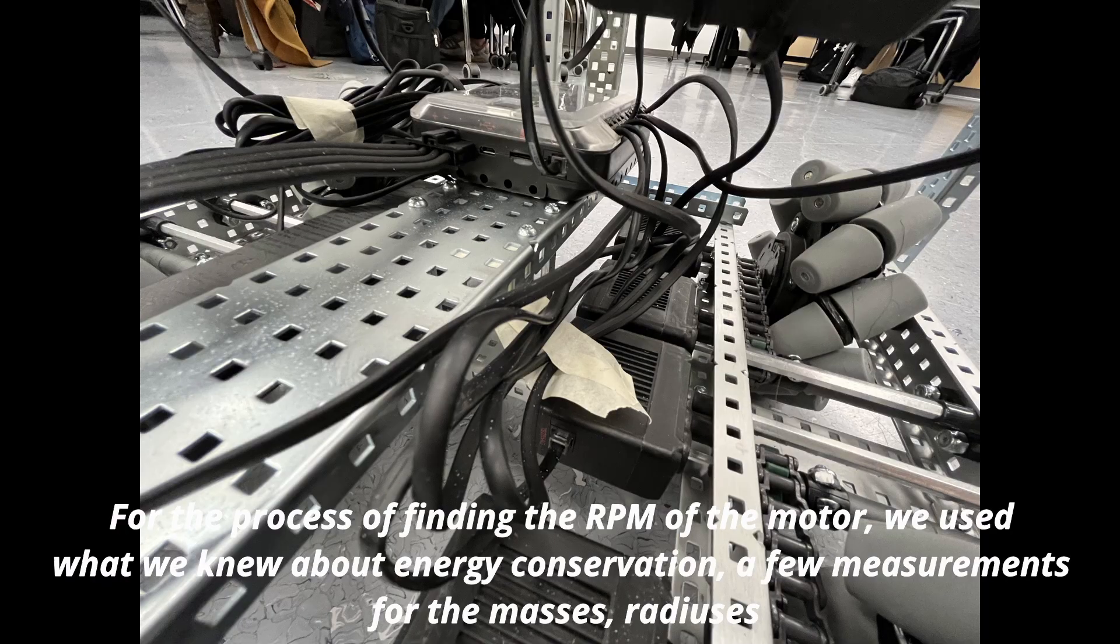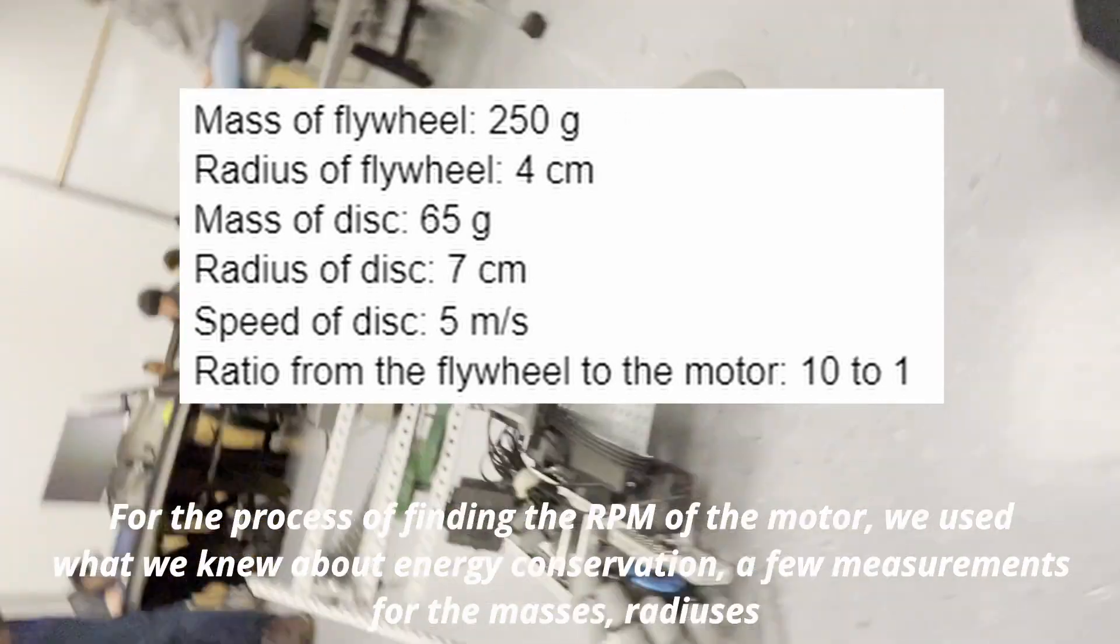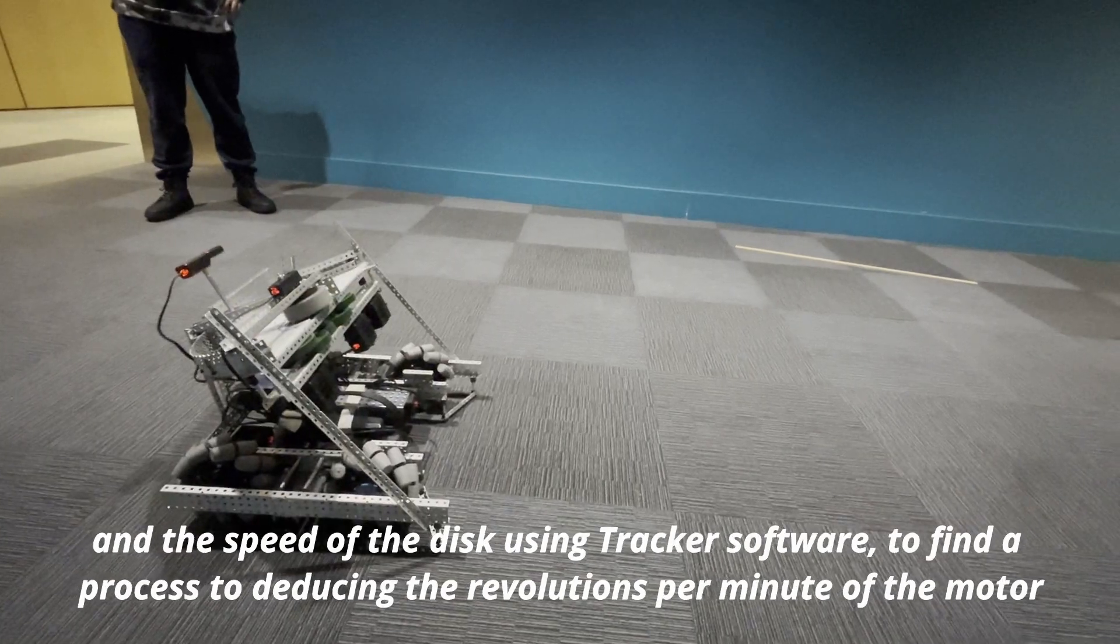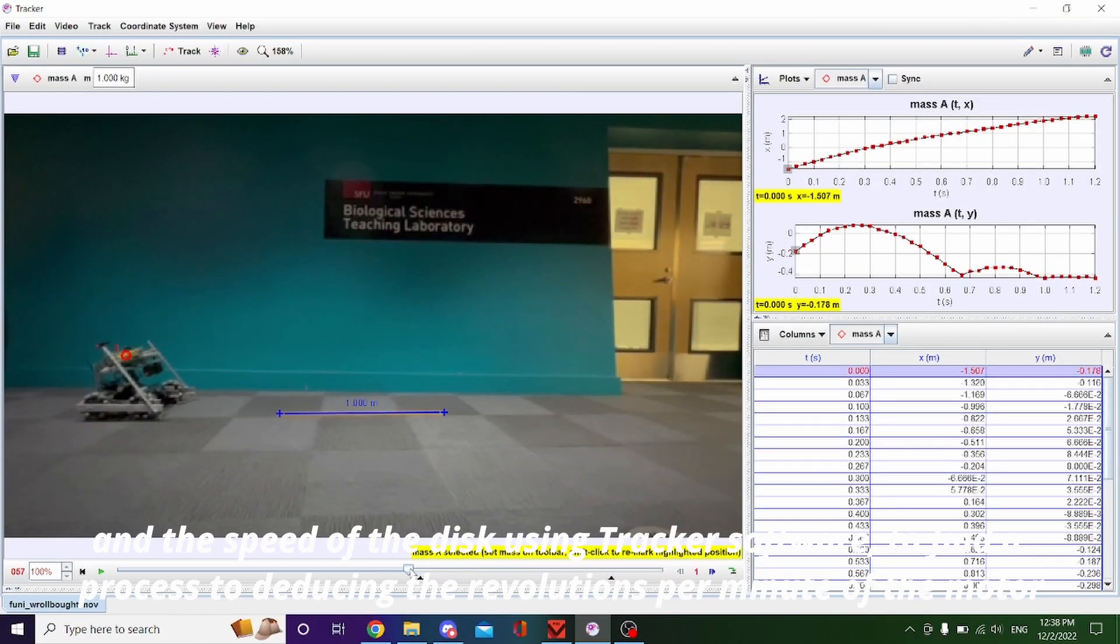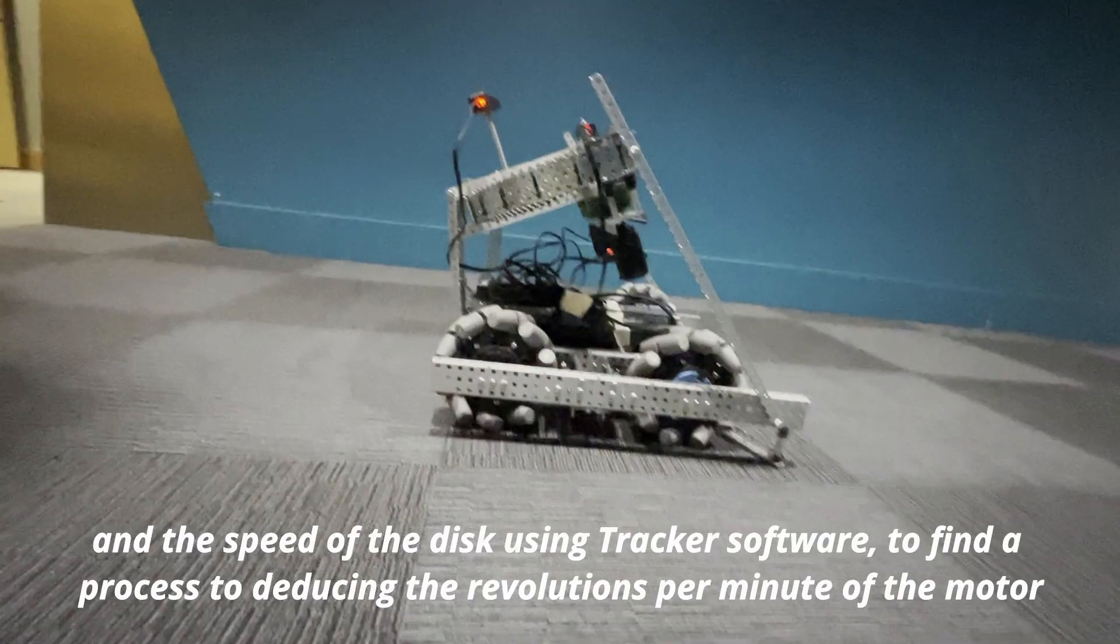For the process of finding the RPM of the motor, we used what we knew about energy conservation, a few measurements for the masses, radiuses, and the speed of the disc using tracker software to find a process for deducing the revolutions per minute of the motor.